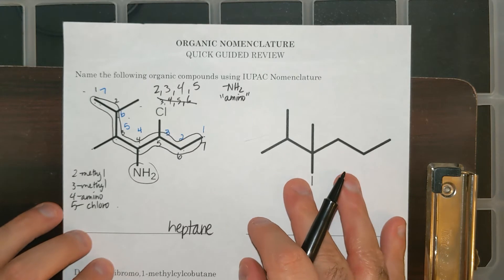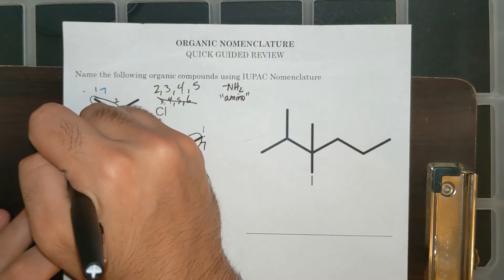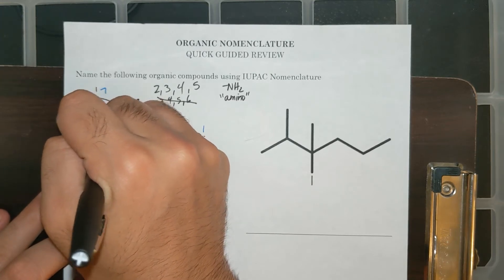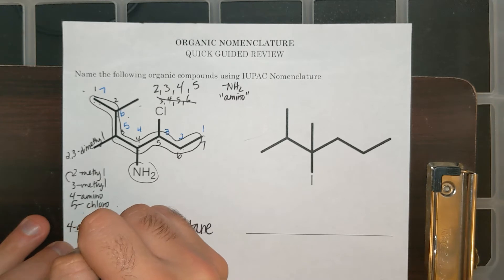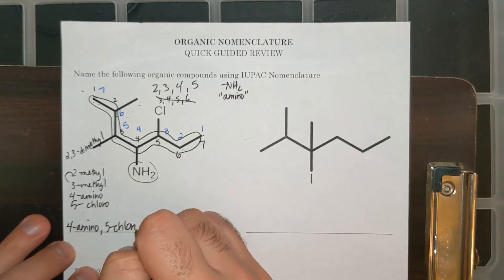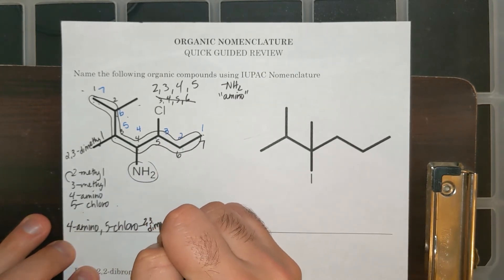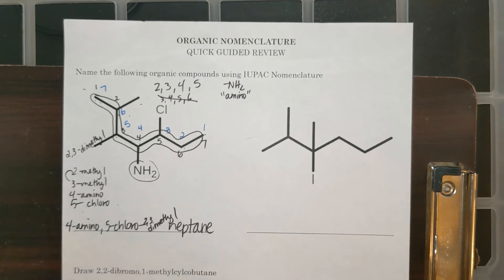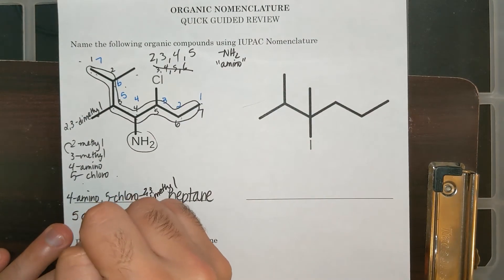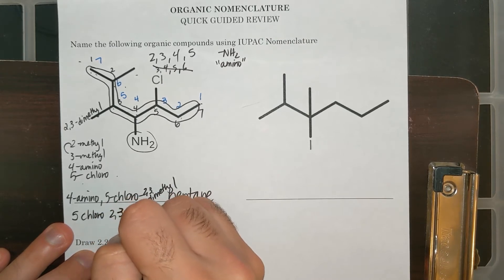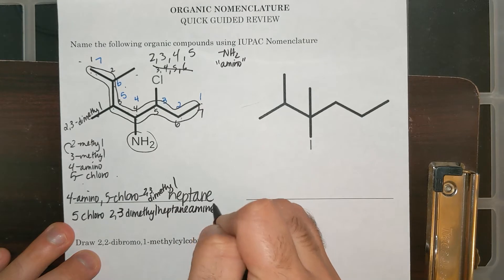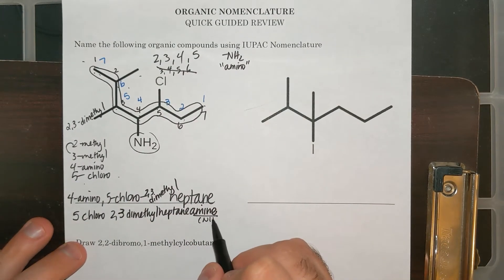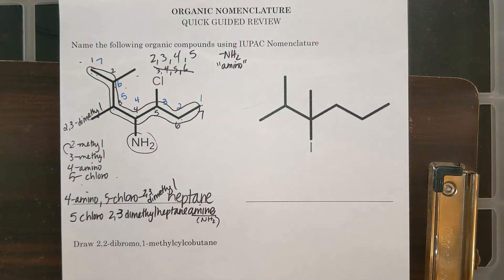Now I have to put this alphabetically and synthesize the name. If I have two methyl groups, we call that dimethyl — so 2,3-dimethyl. And then I have 4-amino and 5-chloro. Alphabetically, 4-amino comes before 5-chloro. So: 4-amino, 5-chloro, 2,3-dimethylheptane. This compound can also be called 5-chloro-2,3-dimethylheptanamine, where it ends in amine because I have an NH2 group. Amine is a type of functional group.